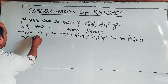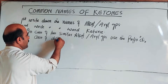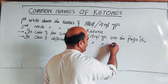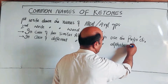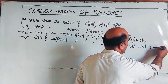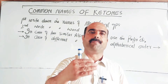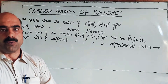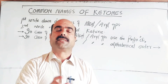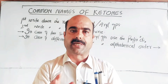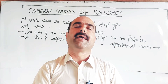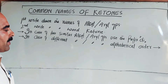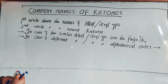In case of different alkyl or aryl groups, use alphabetical order - A, B, C, D up to Z - so that order will be followed. Symmetrical ketones connected to similar alkyl or aryl groups will use the 'di' prefix. Different alkyl or aryl groups will be named in alphabetical order. These three rules will be used for common naming of ketones.